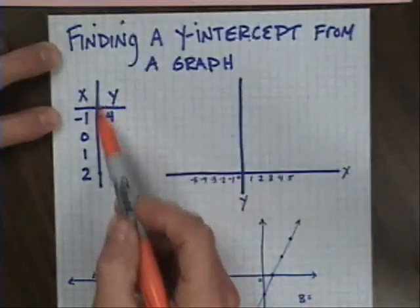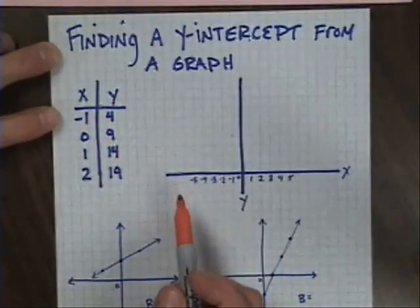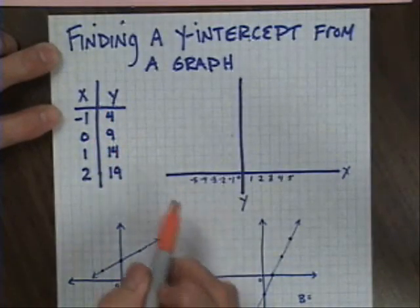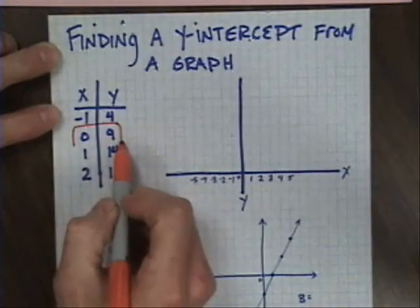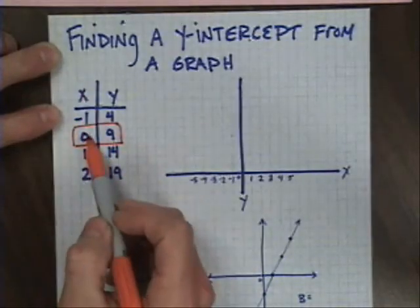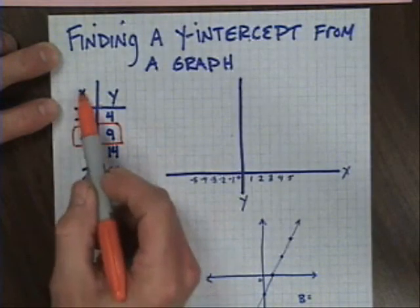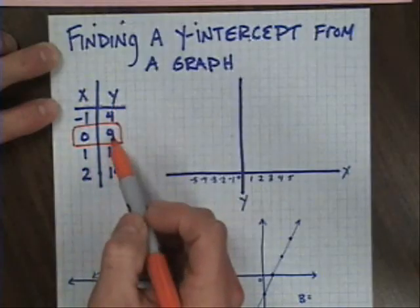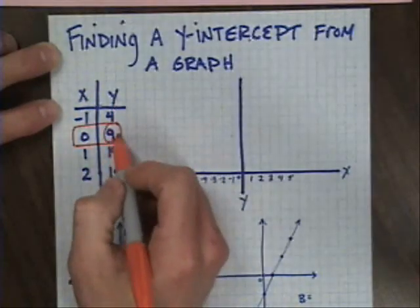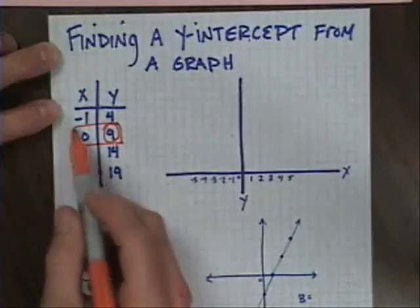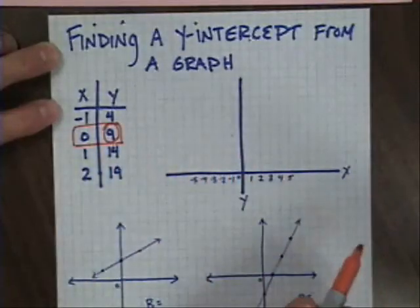Now up to this point, we've looked at finding y-intercepts from tables, and although there are many ways to do this, a shortcut we've talked about in class is to identify when there's a 0 in the x column, the value in the y column is going to be your y-intercept. So with this table of values and this pattern, 9 should be our y-intercept.